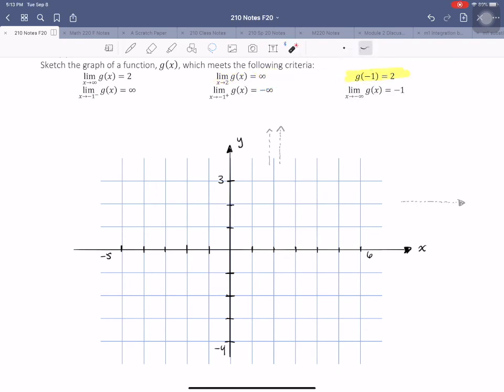Okay, so our third criteria is that at negative 1, when x equals negative 1, that is, the value of g of negative 1 is 2. So I need to put a dot there.